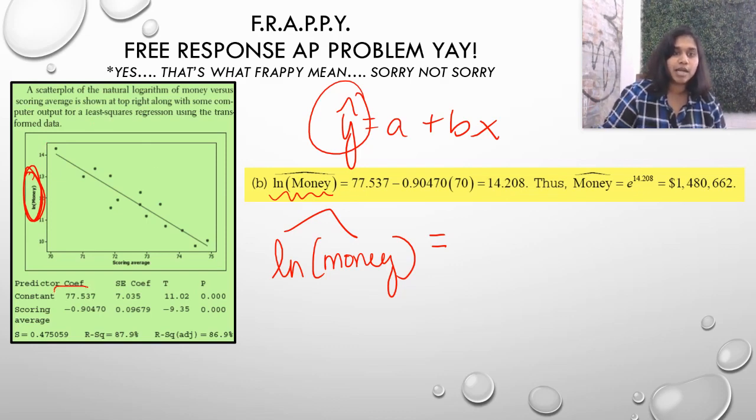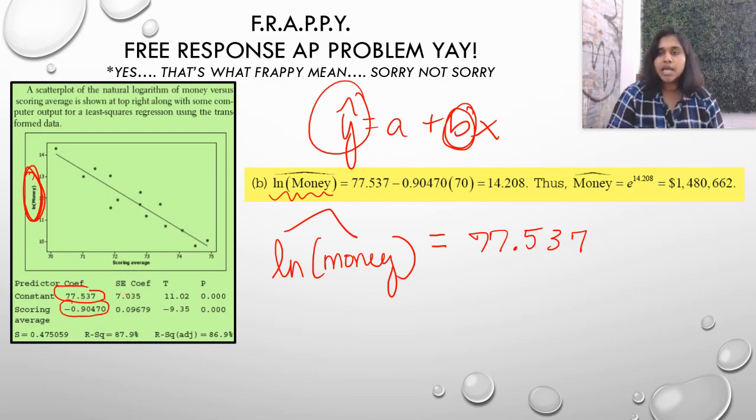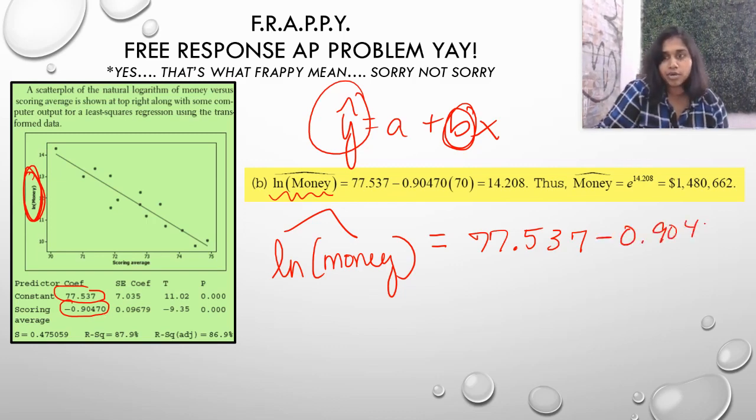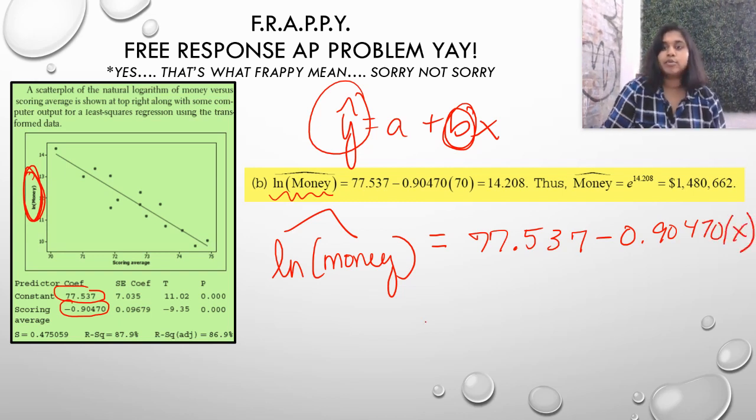What is my a value? Well, that's the y-intercept and that's occurring at, right here, my constant coefficient, 77.547. And then we've got our slope value occurring right here, the scoring average coefficient. So, again, if you're struggling with just reading mini tabs, I've posted links about the mini tab before. You can also Google it. The hardest thing is just remembering which parts are provided in which spots. I think that's the hardest part about this. Negative 0.90470 and then x.